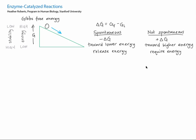Non-spontaneous processes go from low to high energy, have a positive delta G, and require energy to be put into the system.